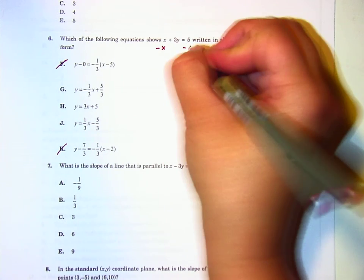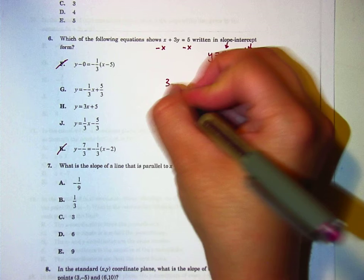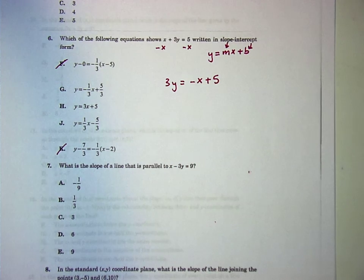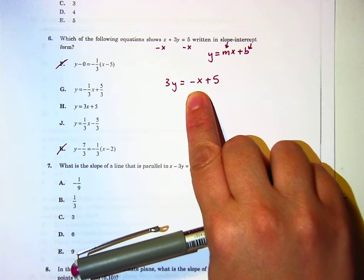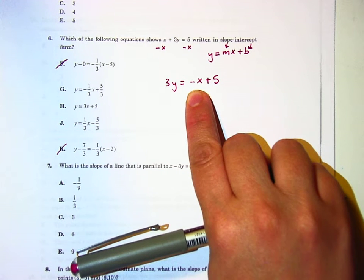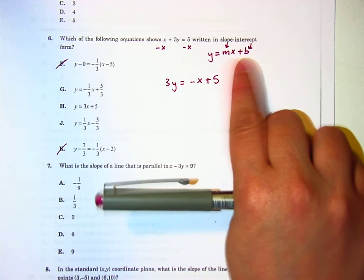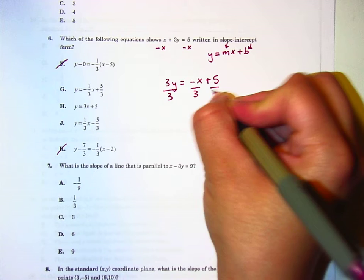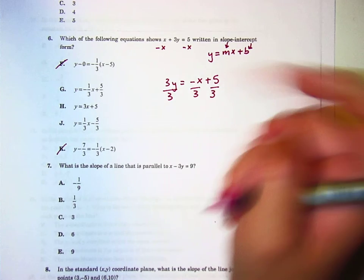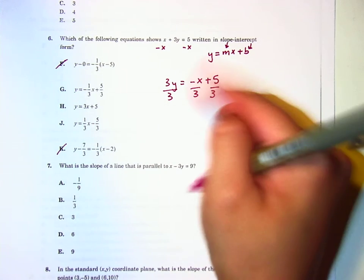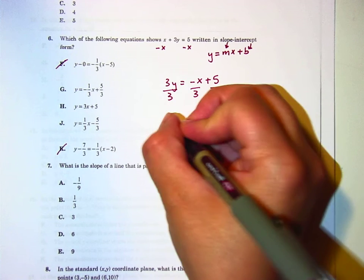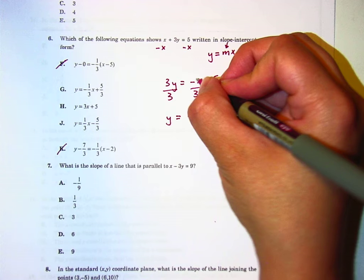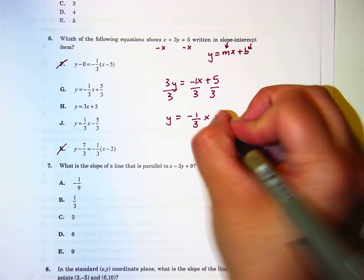First thing I'll do is subtract x from both sides. So that's 3y equals negative x plus 5. I know that normally I would write 5 minus x, but I'm putting that x in the front instead to make it look more like this. And then I'm gonna divide by 3 to get y by itself. Everything has to be divided by 3, not just all of it, each part. So that's y equals negative 1 third x, because there's kind of like a 1 right there, plus 5 thirds.